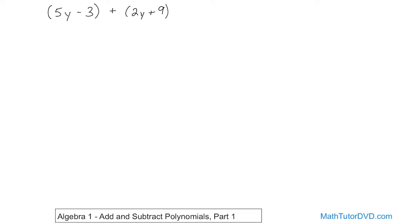First of all, I want to point out that this is grouped in a set of parentheses, but inside you just have 5y minus 3. You obviously can't really add these together because these are unlike terms — you have a 5y here and a constant 3. So these are not like terms. They don't both involve y, so you can't do anything further in here. Same thing with 2y plus 9 — you can't add those anymore. The plus and minus signs are there linking them together, but you can't really simplify inside either one.